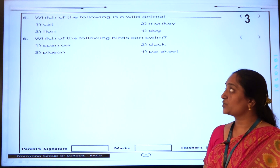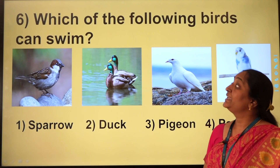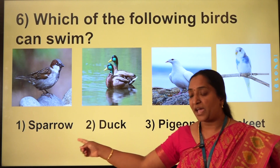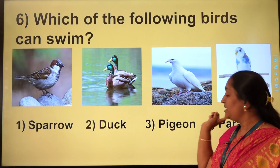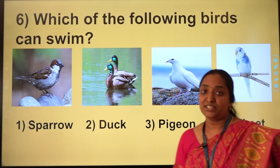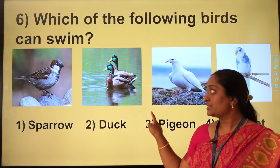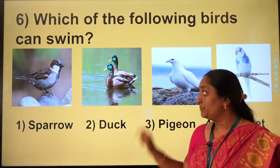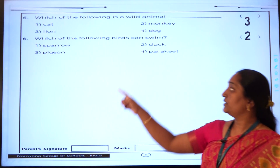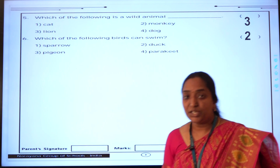Now we will go to the sixth question: which of the following birds can swim? So here we have sparrow, duck, pigeon, and parakeet. By seeing this only you can identify — here the duck is in water. So duck is the bird which can swim in water, that is option number 2. Thank you.